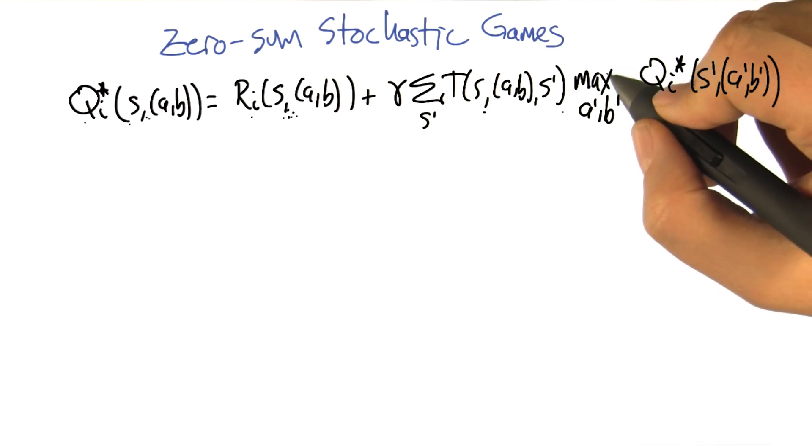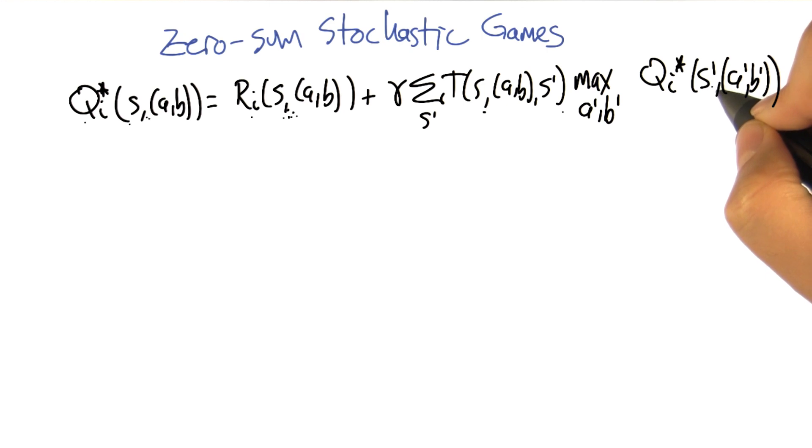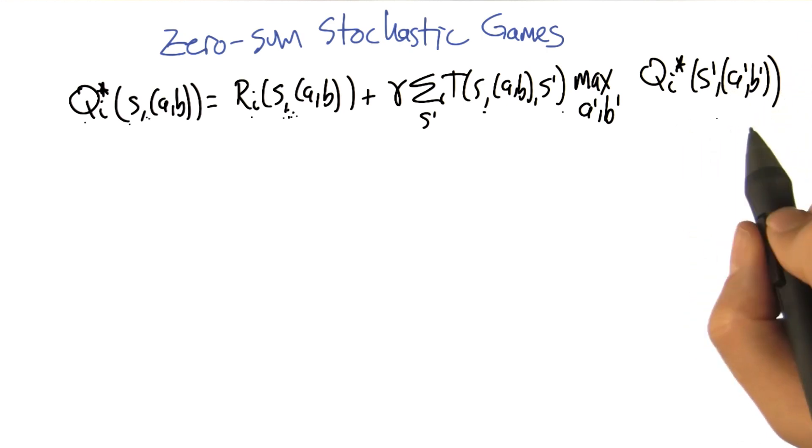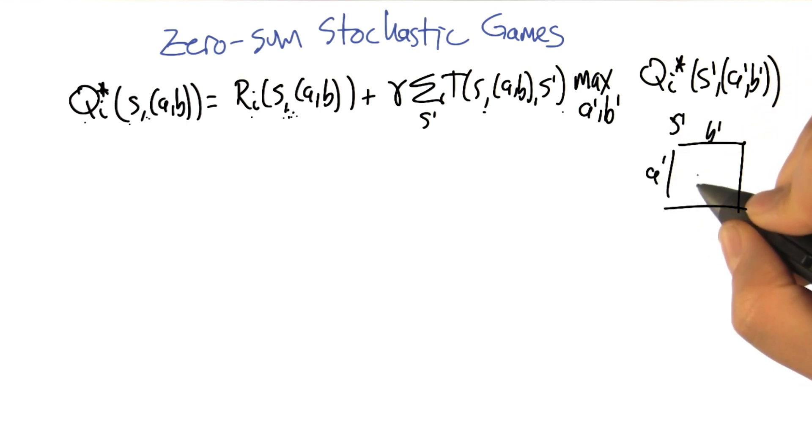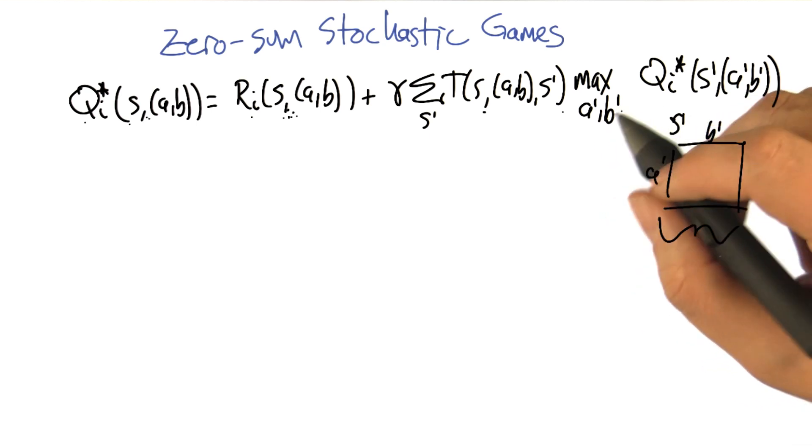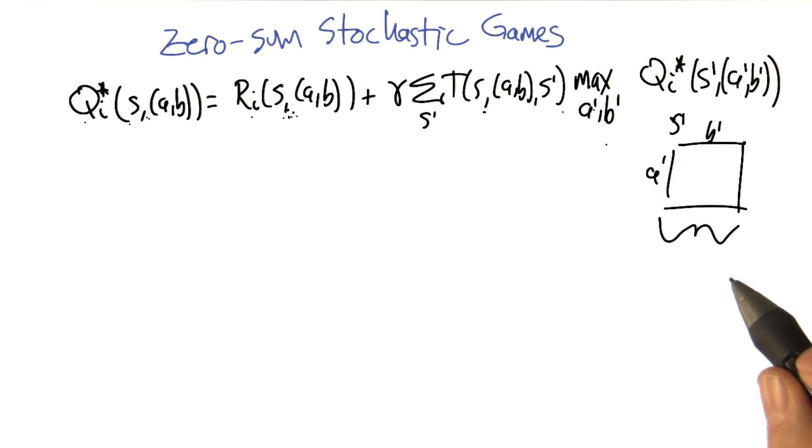All right, so if we say the way we're going to summarize the value for this new state that we land in, is we think of it as actually a matrix game. There's payoffs for each action choices of A prime and B prime. And over all of those, we need to kind of summarize which of those values are we going to propagate forward and call the value of that state. So what we did in regular MDPs is we said, we'll just take a max over all the actions, or in this case, all the joint actions.